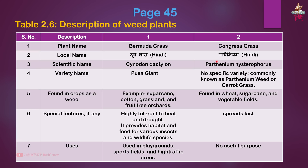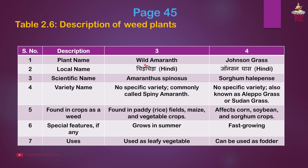Second weed: Congress grass. Local name: Parthenium in Hindi. Scientific name: Parthenium hysterophorus. No specific variety. Commonly known as Parthenium weed or carrot grass. Found in wheat, sugarcane and vegetable fields. Special features: Spreads fast. Uses: No useful purpose.